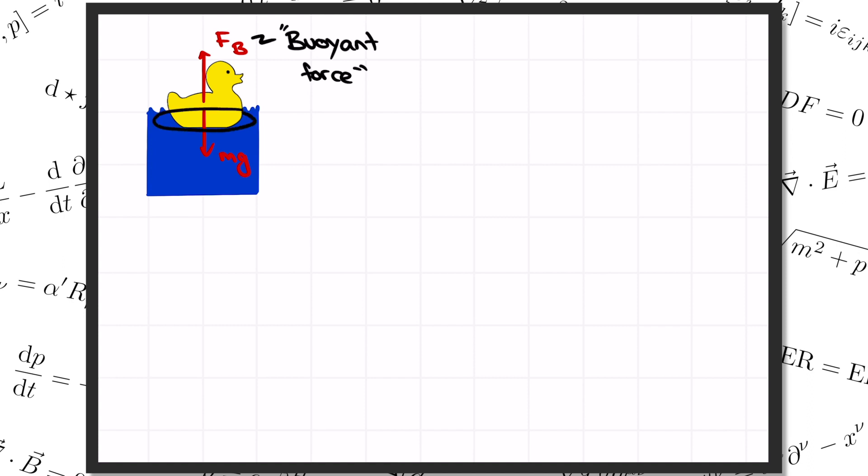But how do we figure out how much of the duck has sunk below the surface of the water? And we know from experience that if you go and try to push the duck deeper down under the water, the buoyant force pushing back up is going to get even bigger. So, how do we explain all that?